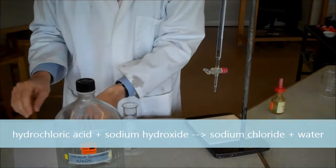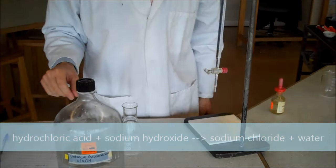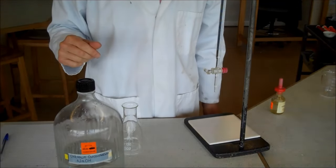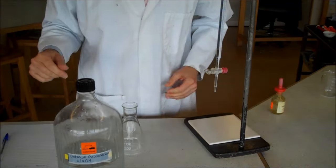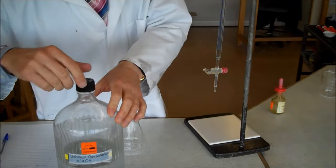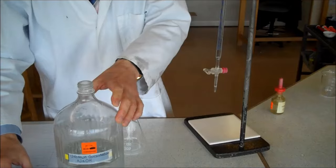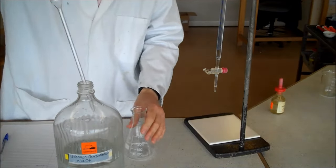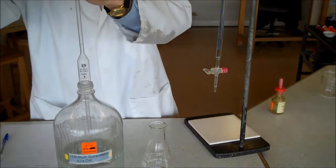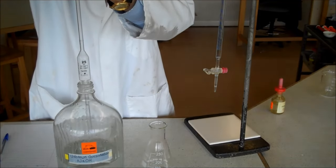If we're going to make a salt which is neutral, we've got to have exactly the right amount of acid to neutralize our alkali. Now our alkali here is corrosive, so I've got to wear lab coat and goggles.